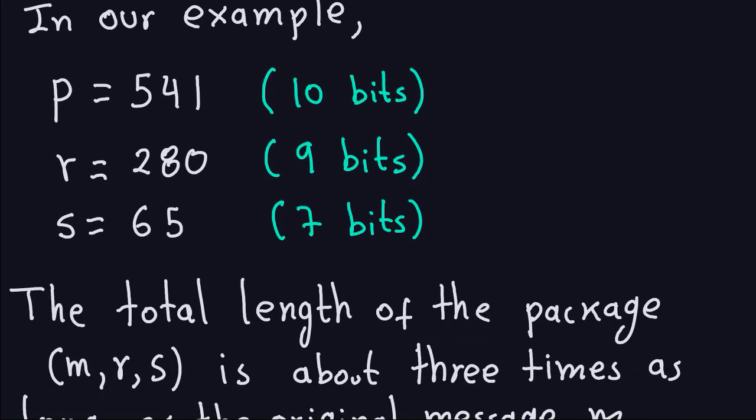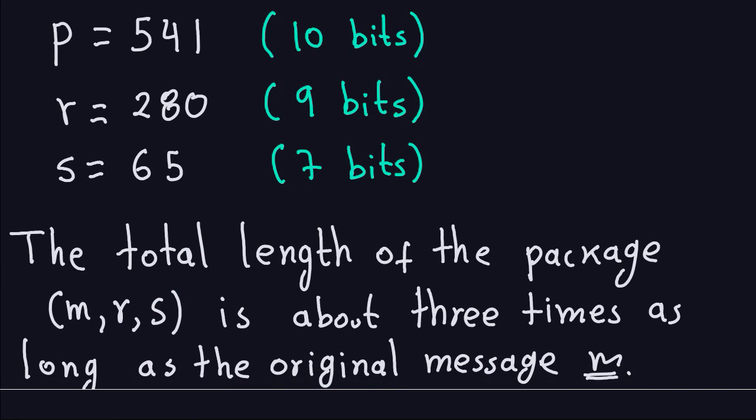The total length of the package, and by package I mean the information that is being sent through the channel, is the message R and S. This is about three times as long as the original message M. That's one of the things you have to worry about if you are concerned about the length of the packages. Using the Elgamal will make the transmission three times as large as the original intended.